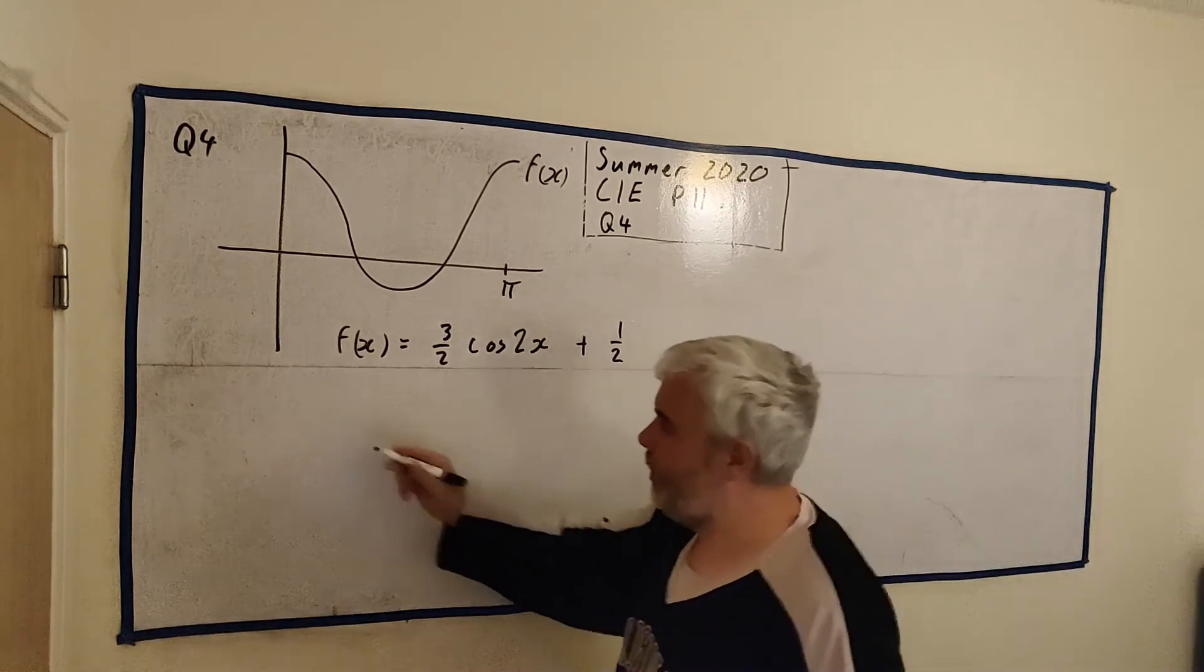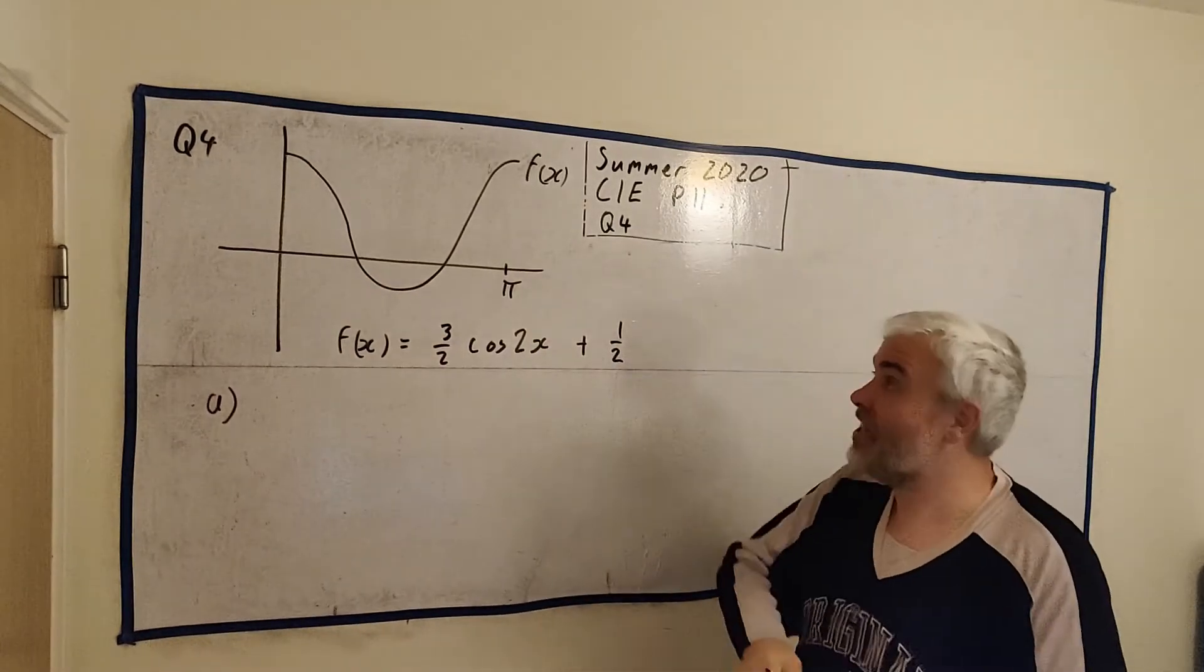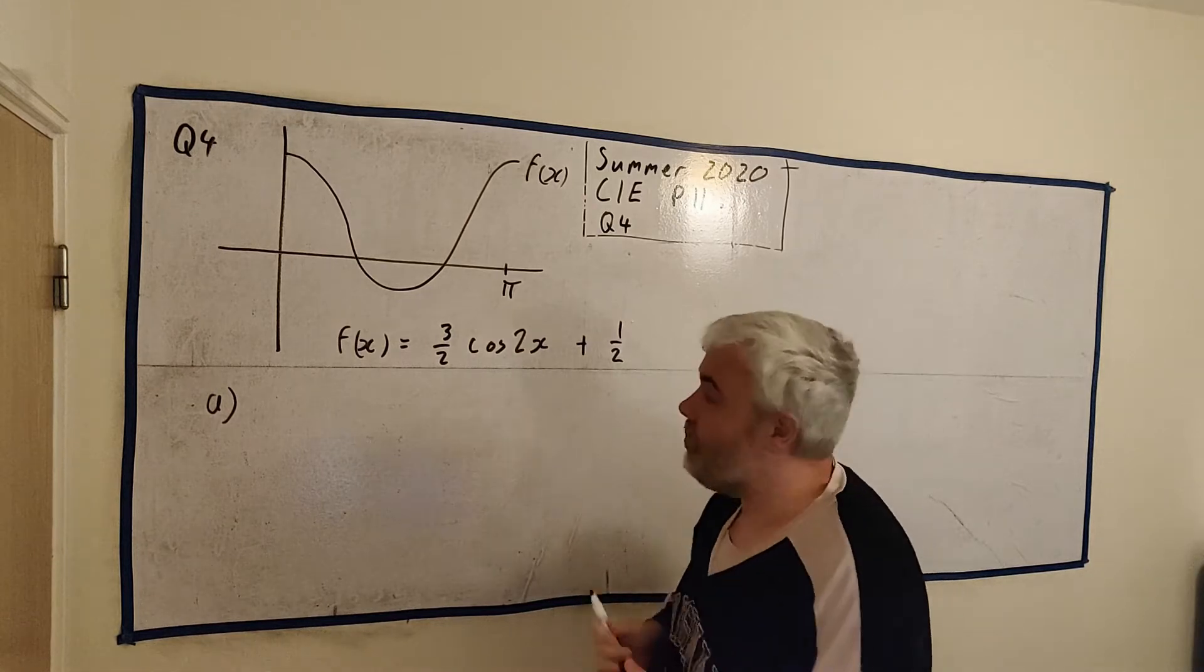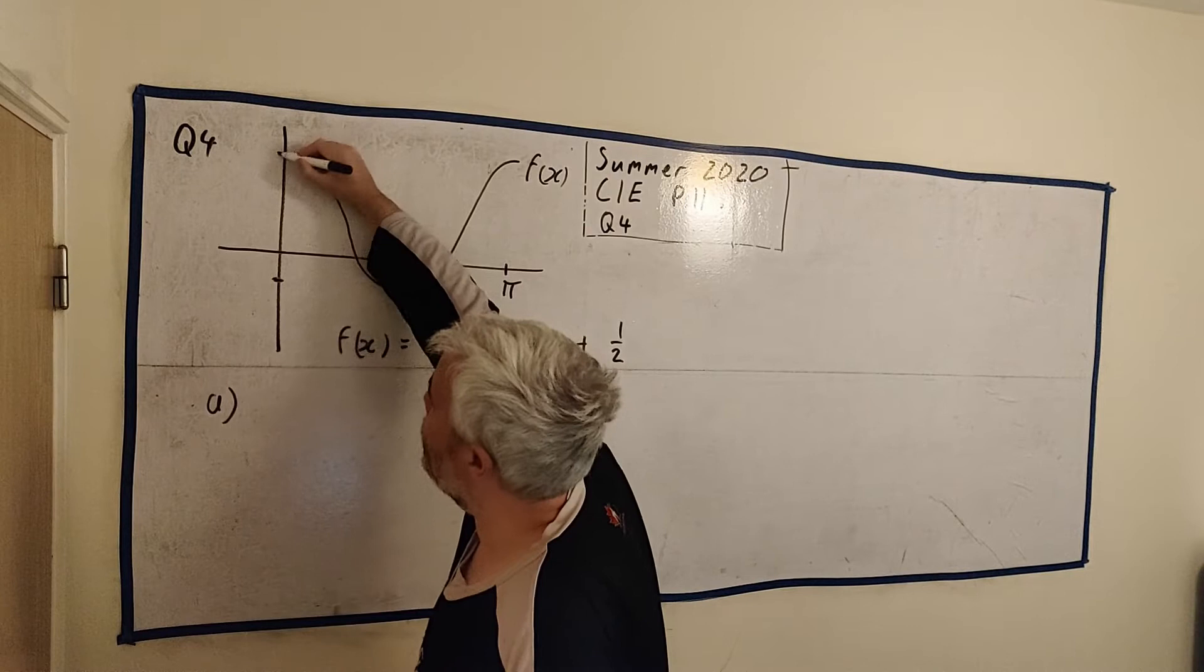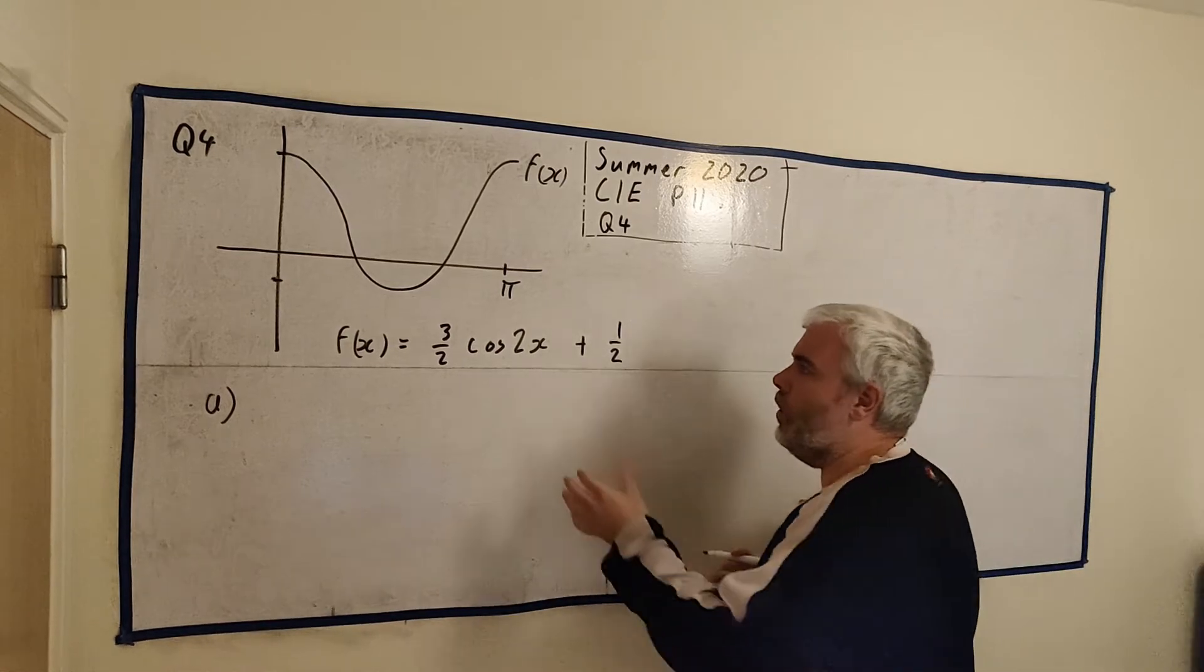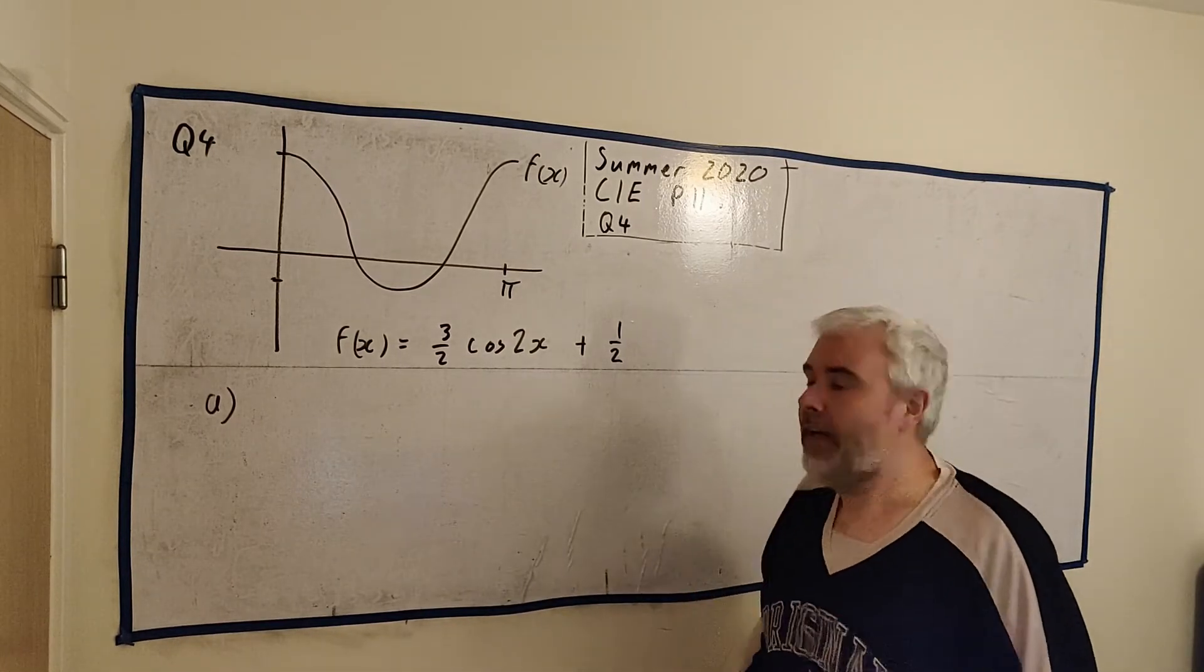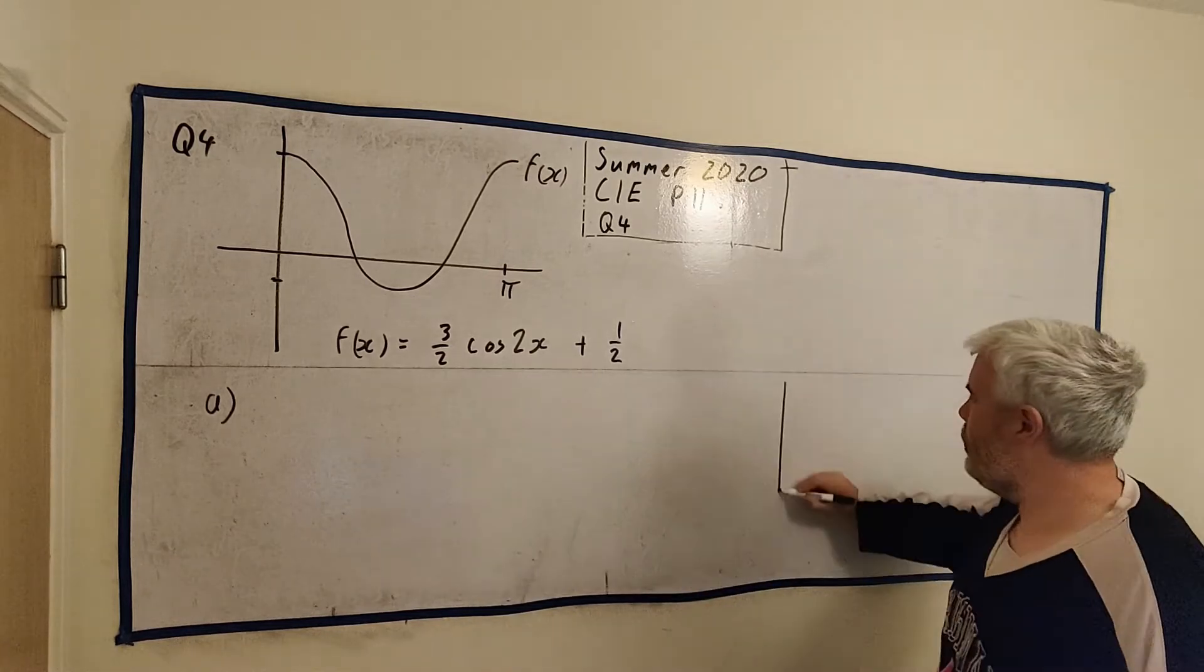Now, the first question is simple enough. Part A asks us the range of f(x). That's as high as it goes and as low as it goes. That's what the range is. So that's really whatever this number is here and whatever this number is here. That'll be the answer for us here. So we do this by really understanding what the cosine function looks like. We don't actually have to do any maths. It's something we learn about.